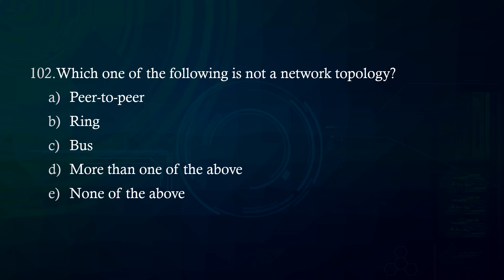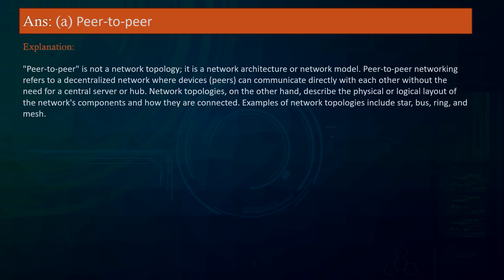Which one of the following is not a network topology? A. Peer-to-peer. B. Ring. C. Bus. D. More than one of the above. E. None of the above. Answer: Peer-to-peer. Explanation: Peer-to-peer is not a network topology; it is a network architecture or model where devices communicate directly without a central server. Network topologies describe the physical or logical layout of network components. Examples include star, bus, ring, and mesh.